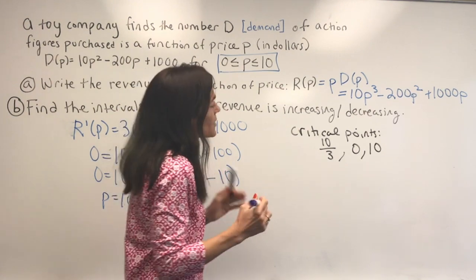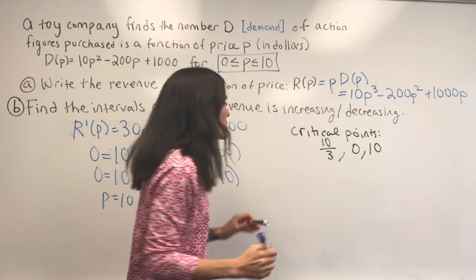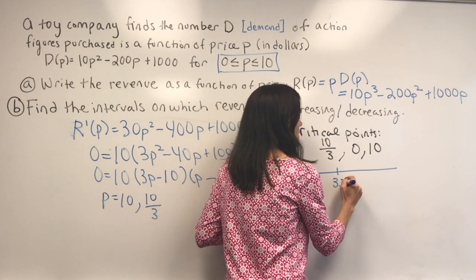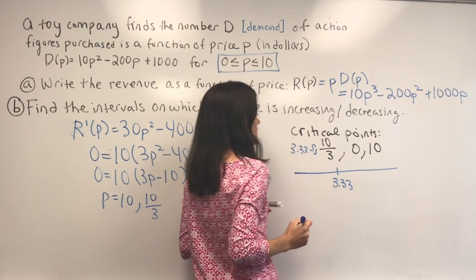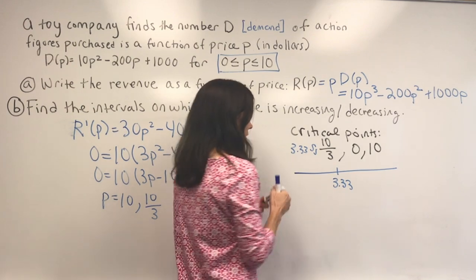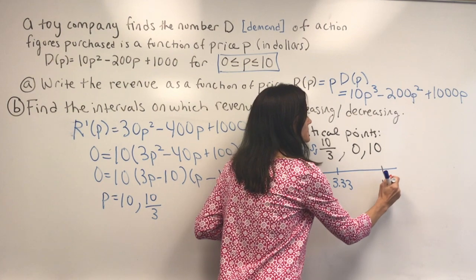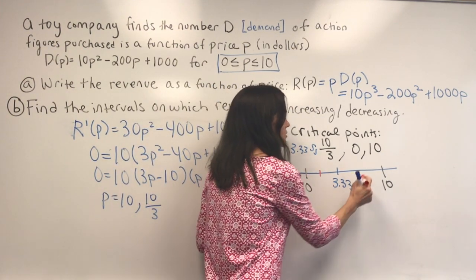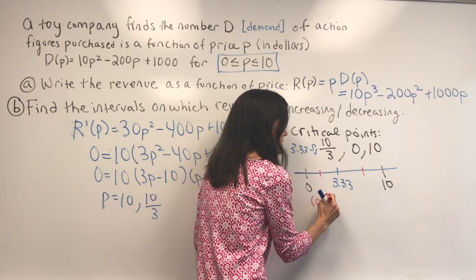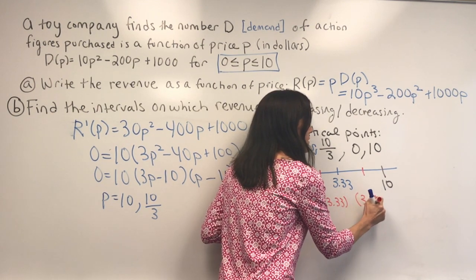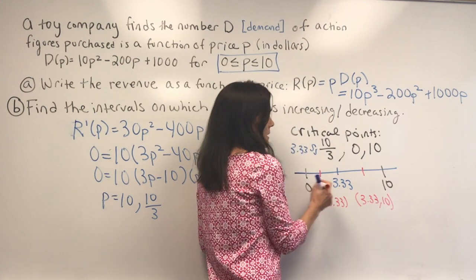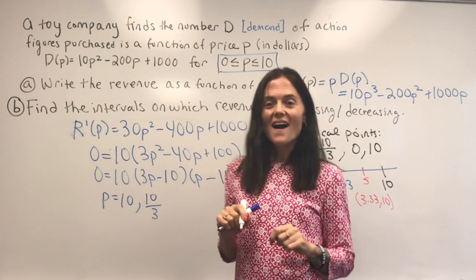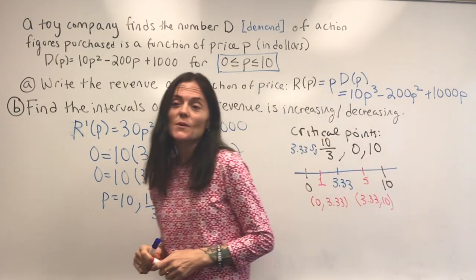These are our critical points. For the open intervals, the two endpoints don't come into play so much for the sign analysis. We put 10/3, which is approximately 3.33, as our interior critical point, then the ends of our interval. To figure out where the function is increasing or decreasing, we pick a test point in each interval: the intervals are (0, 3.33) and (3.33, 10), and we pick maybe 1 and 5. We test the derivative: positive means increasing, negative means decreasing.